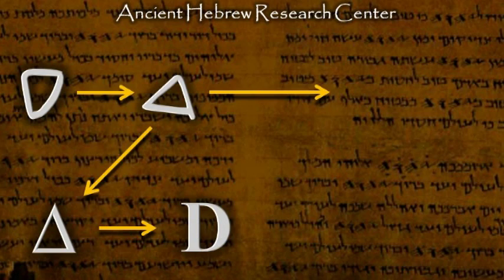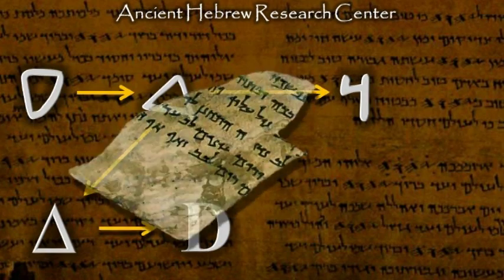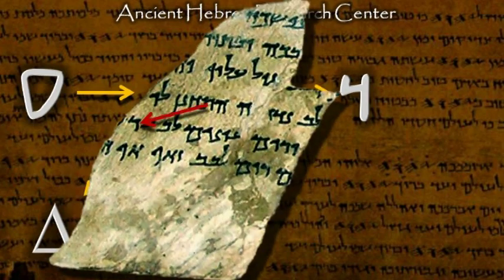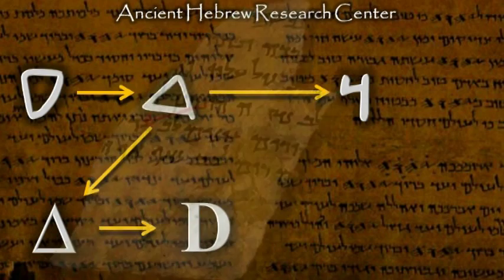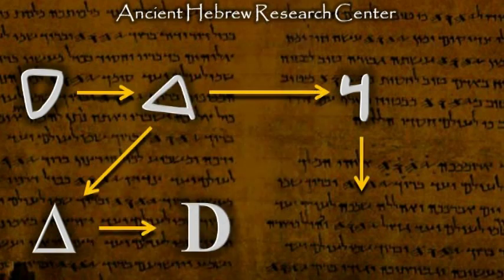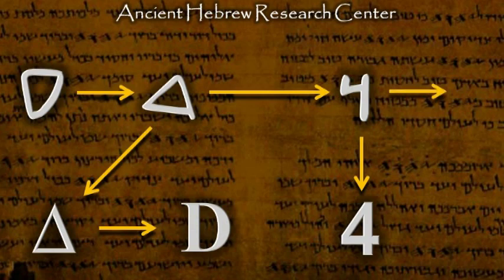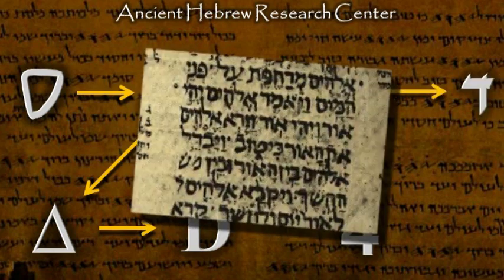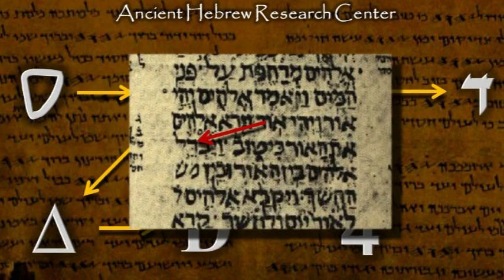Around 400 BC this letter evolved slightly and can be seen in this fragment from the Dead Sea Scrolls. This letter, the fourth letter in the Hebrew alphabet, became the number four. It remained virtually unchanged in the modern Hebrew alphabet, as can be seen in the Leningrad Codex, dated at about 1000 AD.